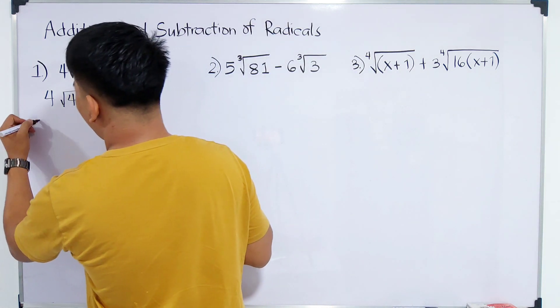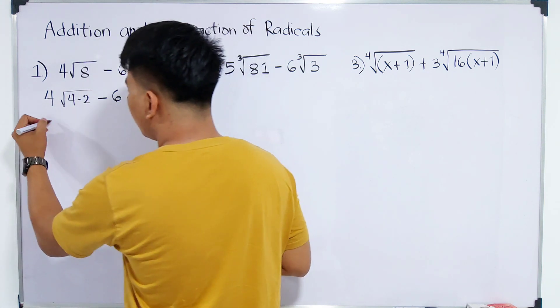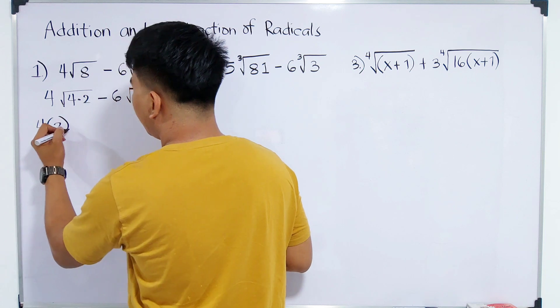We will extract this. It will become 4 times the square root of 4, which is 2, taken outside.